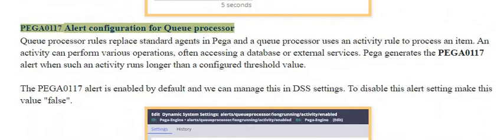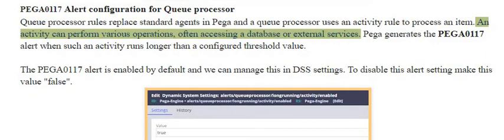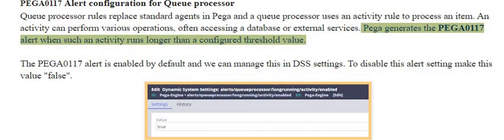PEGA0117 alert configuration for queue processor. Queue processor rules replace standard agents in Pega, and a queue processor uses an activity rule to process an item. An activity can perform various operations, often accessing a database or external services. Pega generates the PEGA0117 alert when such an activity runs longer than a configured threshold value.